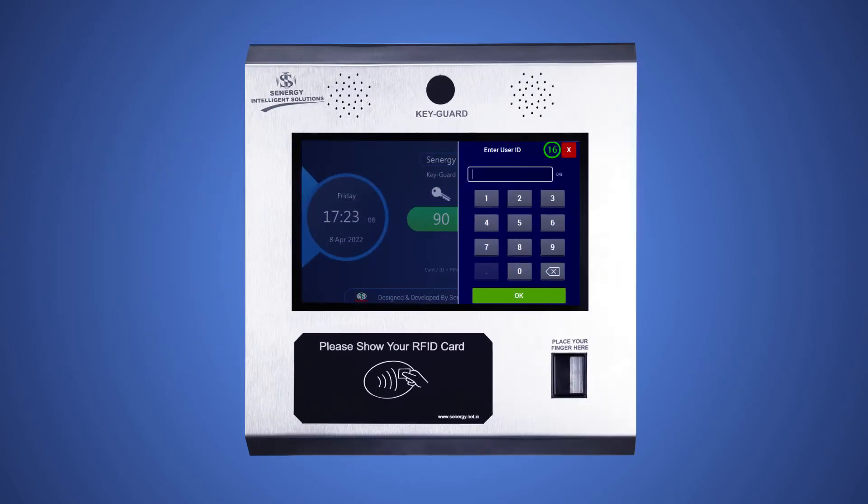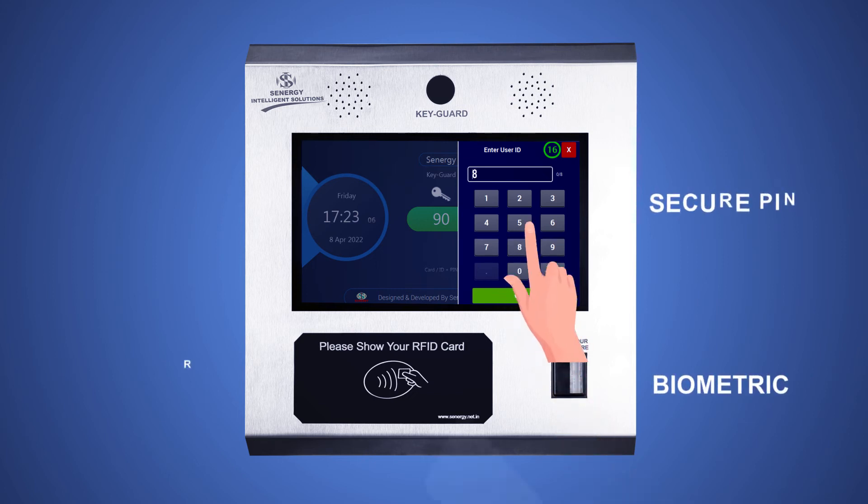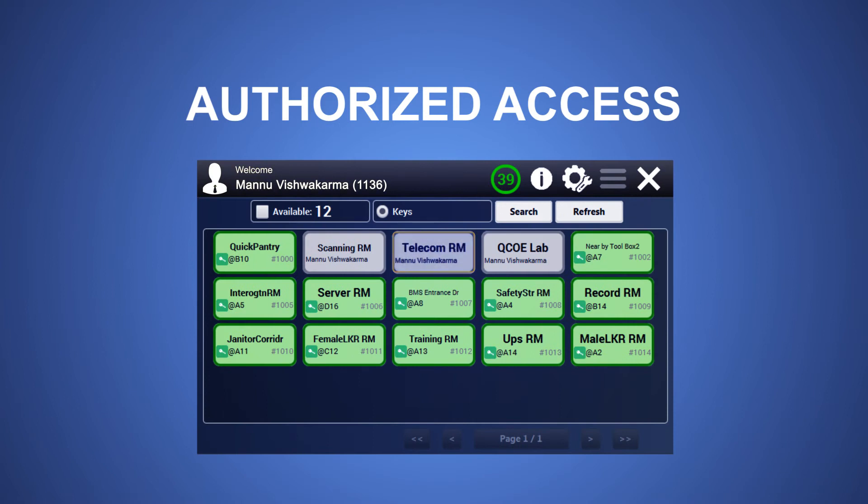To retrieve a key, simply authorize yourself on the KMS console using multiple user access modes like biometrics, secure pin, and RFID card swipe for easy access or any combination of these for enhanced security. A user can choose a key from the list of keys he is authorized to access.